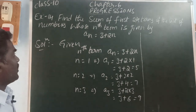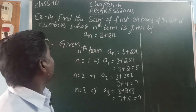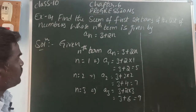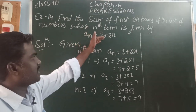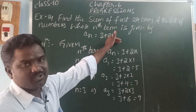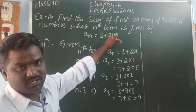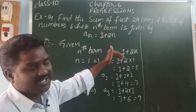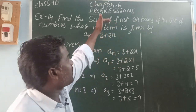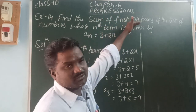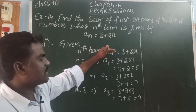Example 14: Find the sum of the first 24 terms of the list of numbers whose nth term is given by an = 3 + 2n. They have given the nth term, and from this nth term we can find each term. They are asking for the sum of the first 24 terms.